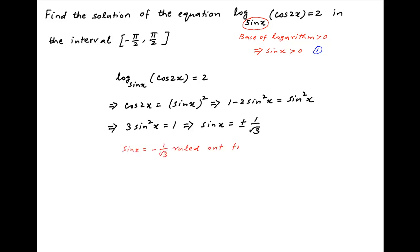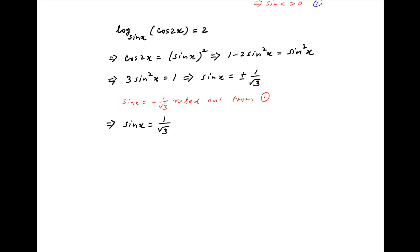Now sin x equals minus 1 upon root 3 is ruled out because we established earlier that sin x is strictly greater than 0. Therefore sin x equals plus 1 upon root 3.